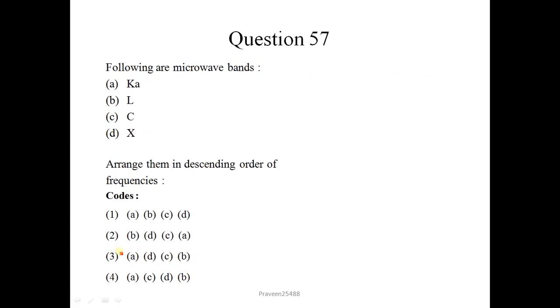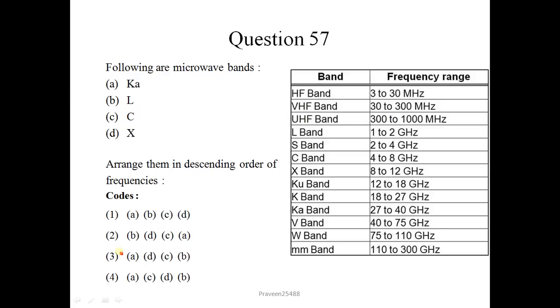Following are microwave bands K, A, L, C, X. Arrange them in descending order of frequencies. I will show you the bands and their corresponding frequencies. Basically, for microwave ranges in gigahertz, and mm is the millimeter wave. Correct order of their frequency range in descending order is ADCD. Correct option is 3.